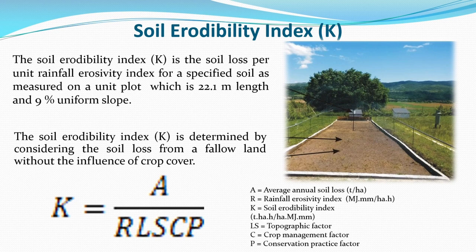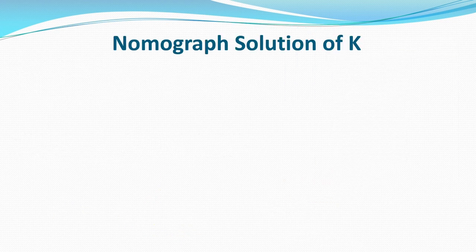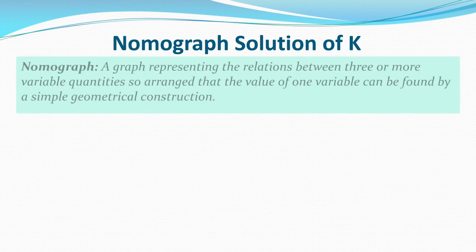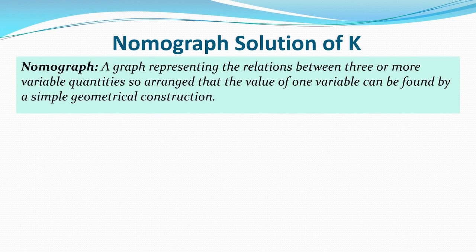K can also be obtained using a nomograph — a graph representing the relations between three or more variable quantities, arranged so that the value of one variable can be found by a simple geometrical construction.